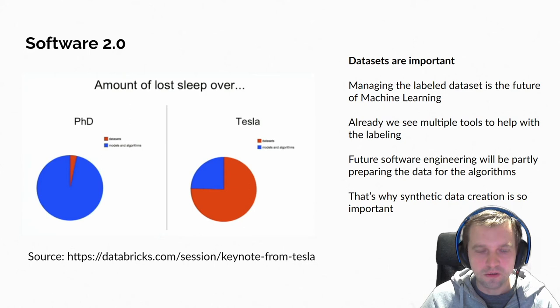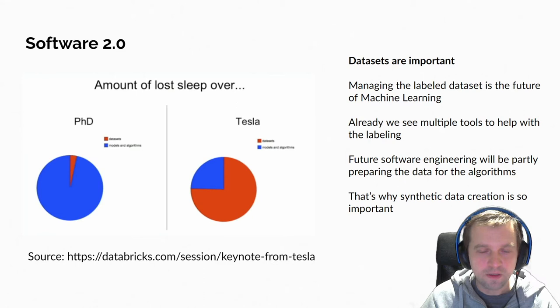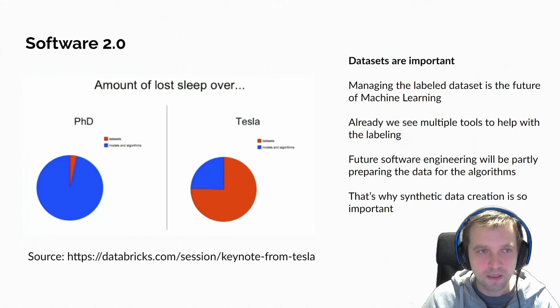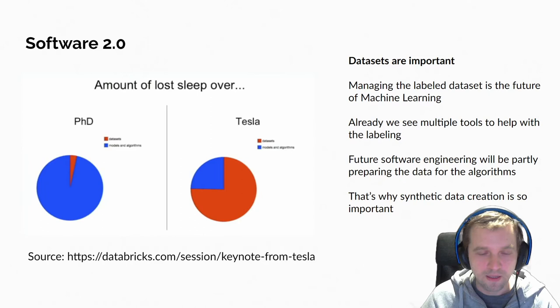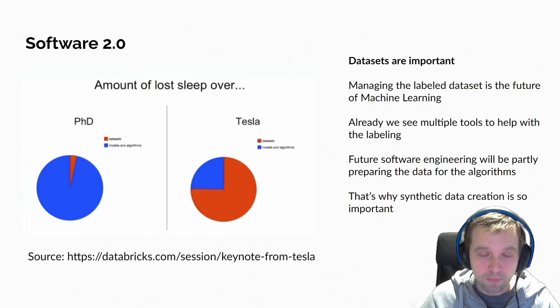You may know Andrej Karpathy — he's the chief machine learning director at Tesla right now, and he started OpenAI before, so he's quite famous in the community. He coined the term 'Software 2.0'. He believes that Software 1.0 is writing code as we are accustomed to doing, but Software 2.0 is more like managing datasets — how they are structured, what they consist of, what quality the datasets have.